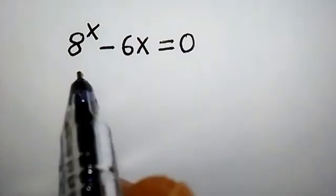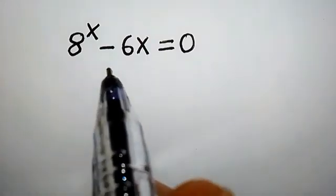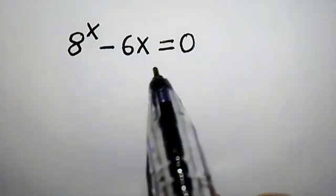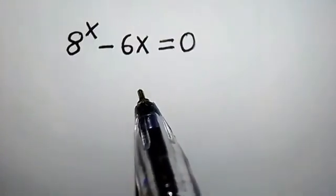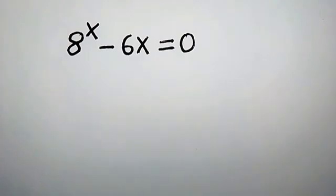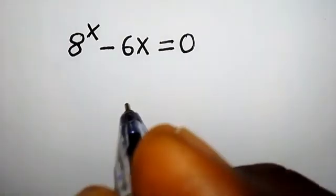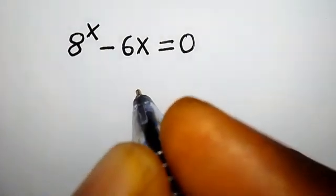Hello, welcome back. We have 8 to the power of x minus 6x equal to 0. How do we solve for x? Without further delay, let's begin.